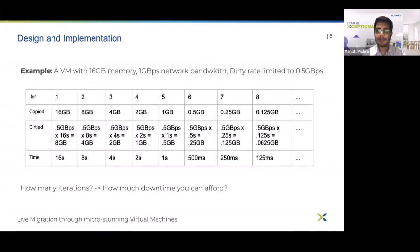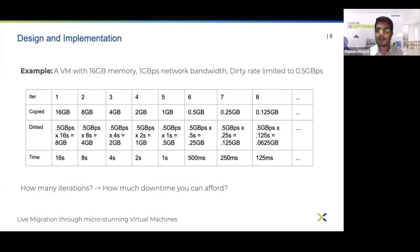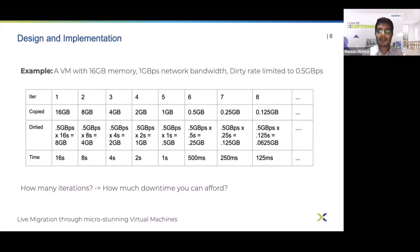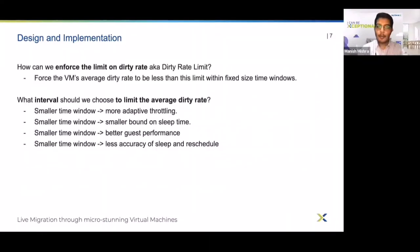After the eighth iteration, the amount of dirty memory left will be 0.0625 GB, which with the available network bandwidth we can transfer in 125 ms — less than the default blackout time of 200 ms. So we can see that if we limit dirty rate to some factor of network bandwidth, we can always guarantee convergence. Not only can we guarantee convergence, we can actually predict in advance the maximum time to migrate the VM. For x equal to 2, max time to migrate is twice the VM size divided by the average network throughput.